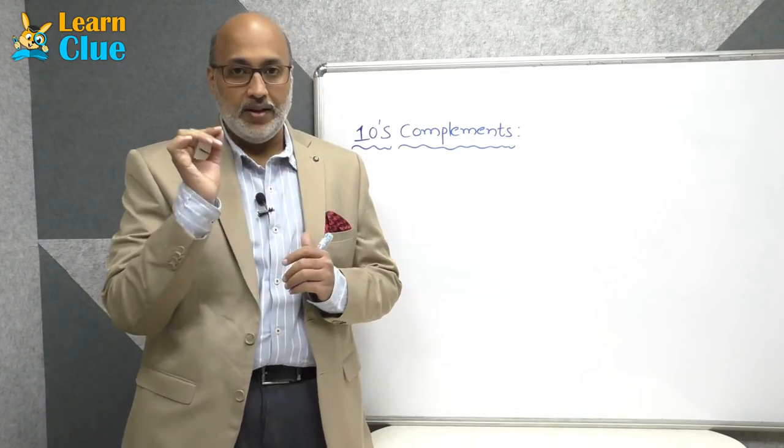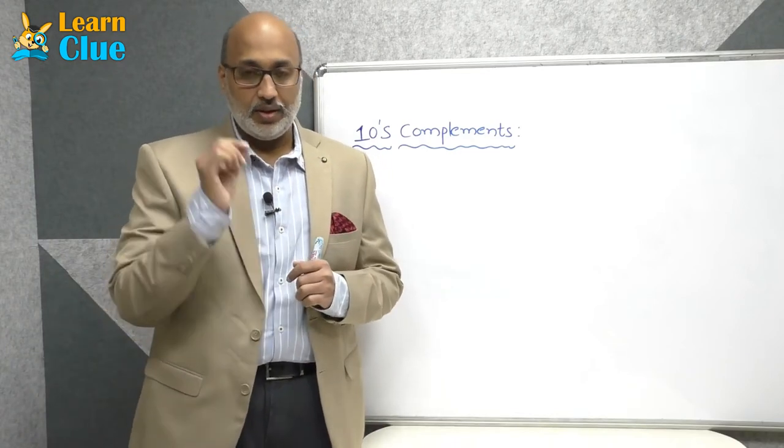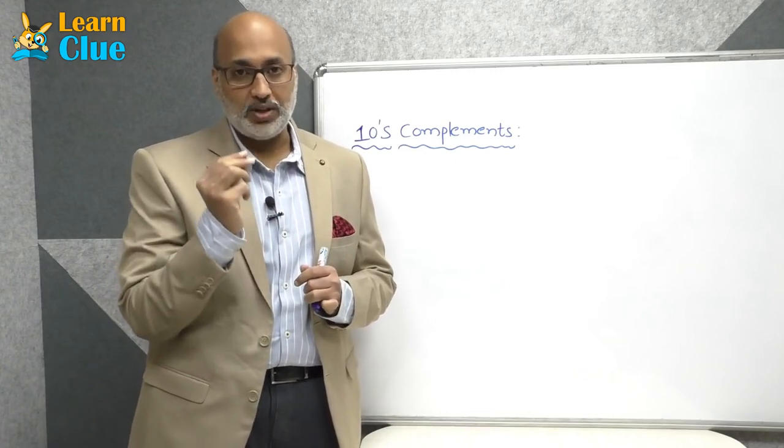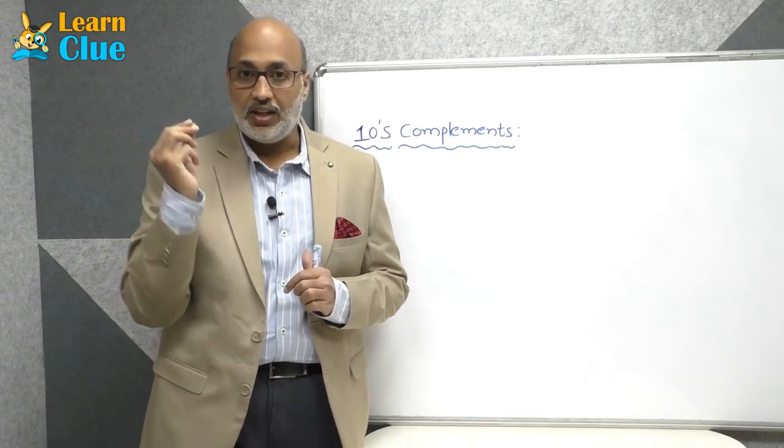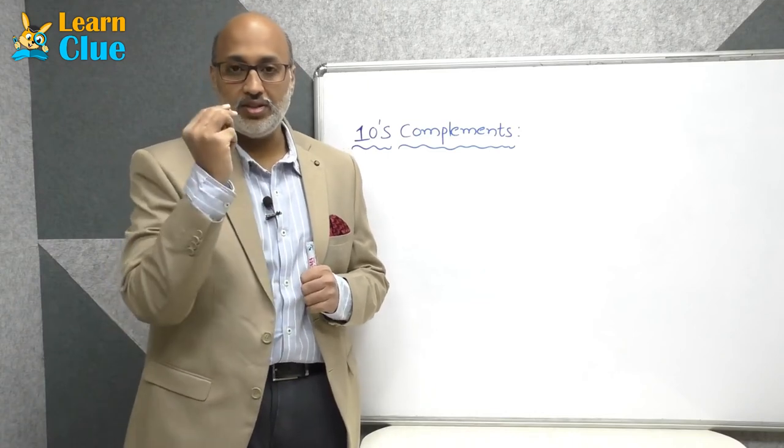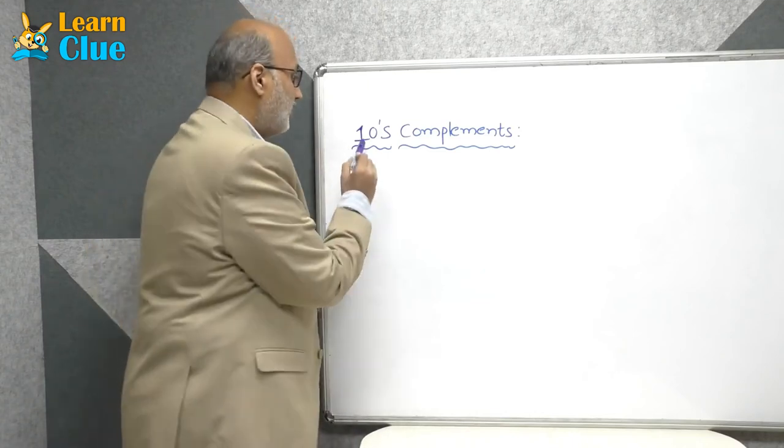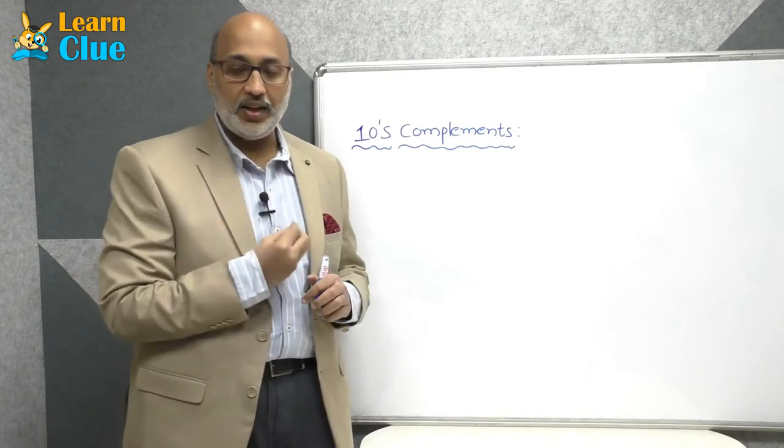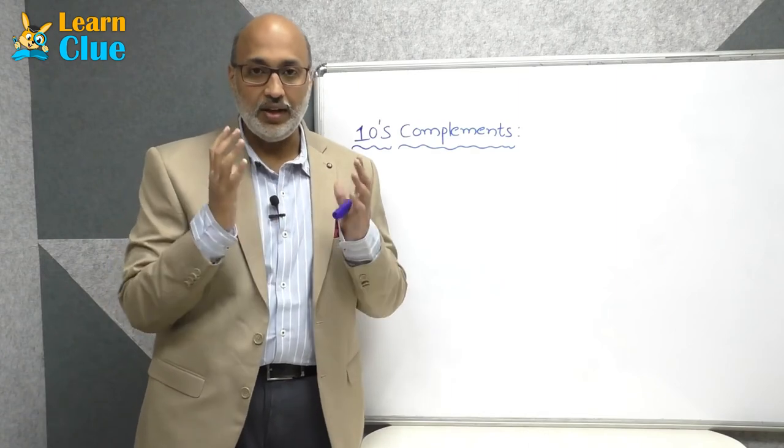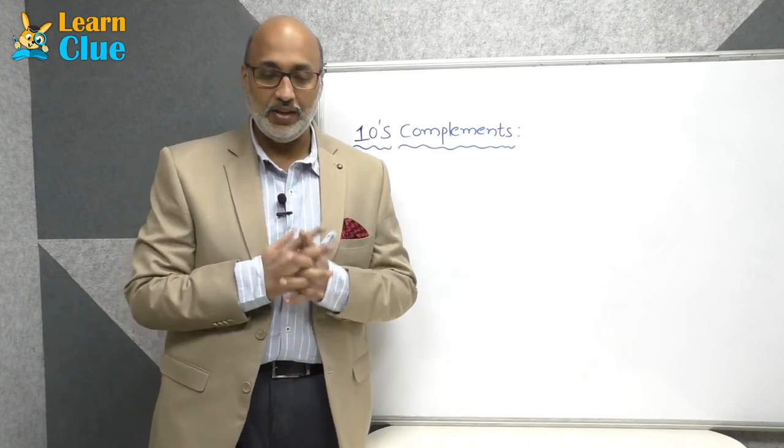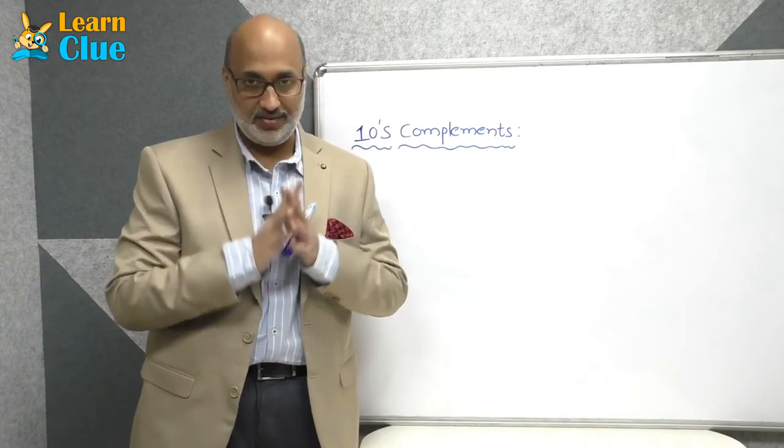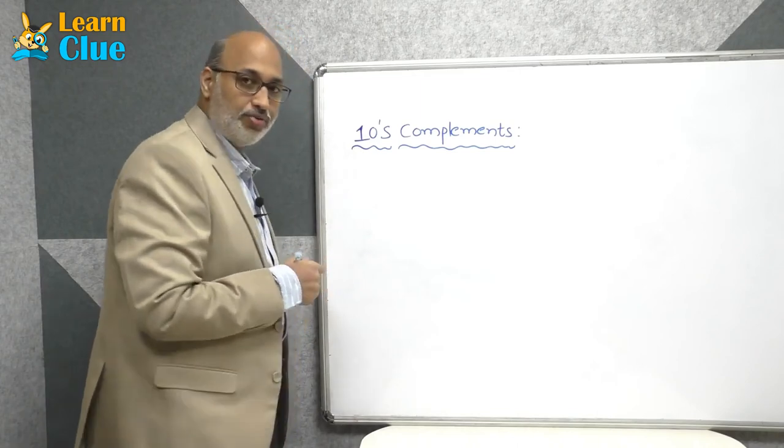Now coming to the first point, complements. As I told you earlier, the combination of two particular things will derive a particular solution, which is called a complement. Here what is the complement? 10 is the complement. To get the 10, we have to find out the right combination. Here we will see what are all the best possibilities of combination of a 10. Let's find out a new friends group.